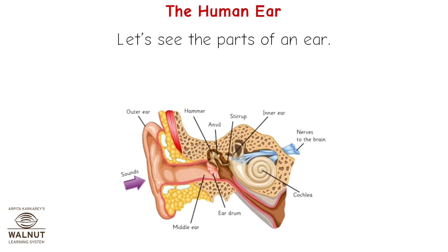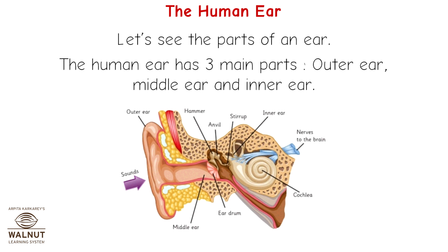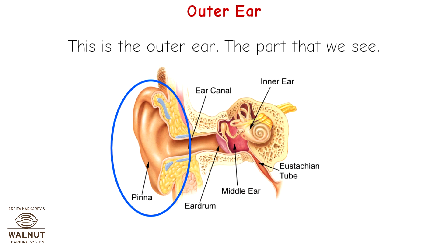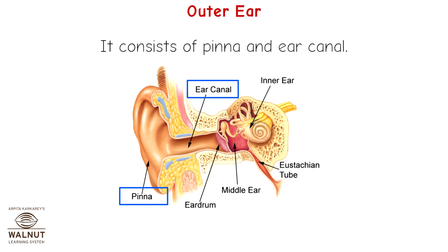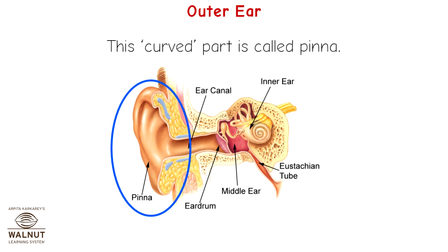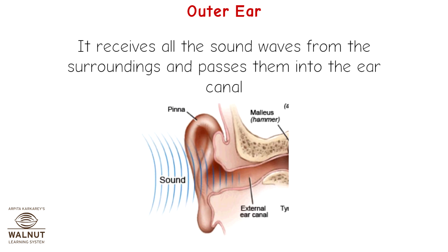Let's see the parts of an ear. The human ear has three main parts: outer ear, middle ear, and inner ear. This is the outer ear — the part that we see. It consists of the pinna and ear canal. This curved part is called the pinna; it receives all the sound waves from the surroundings and passes them into the ear canal.